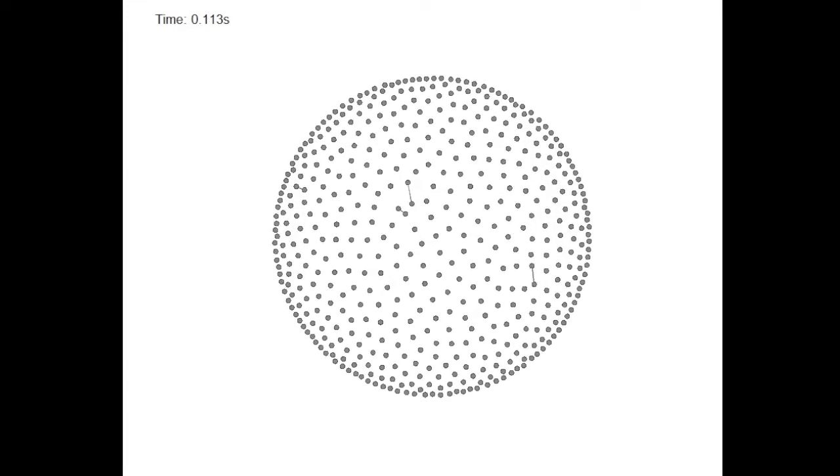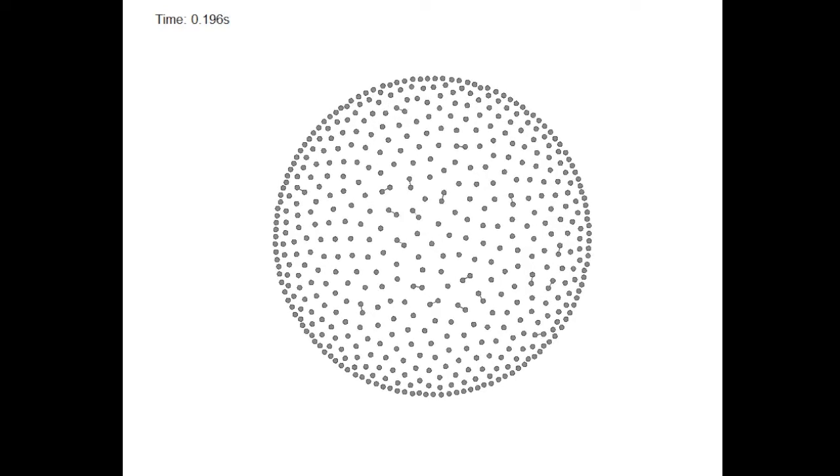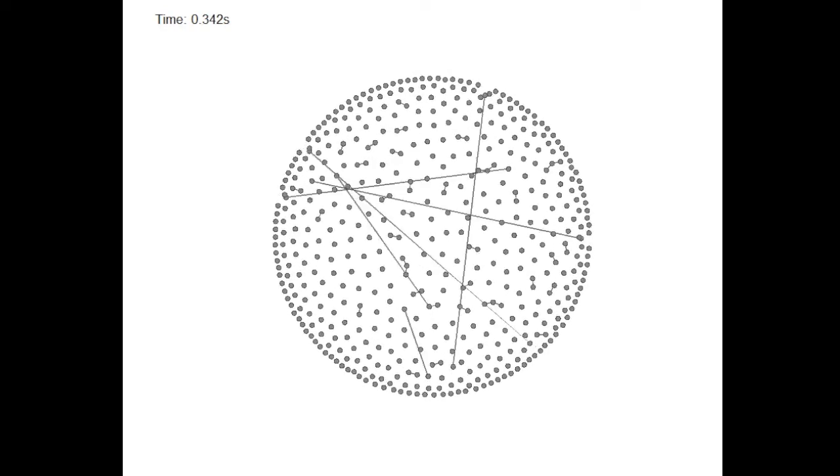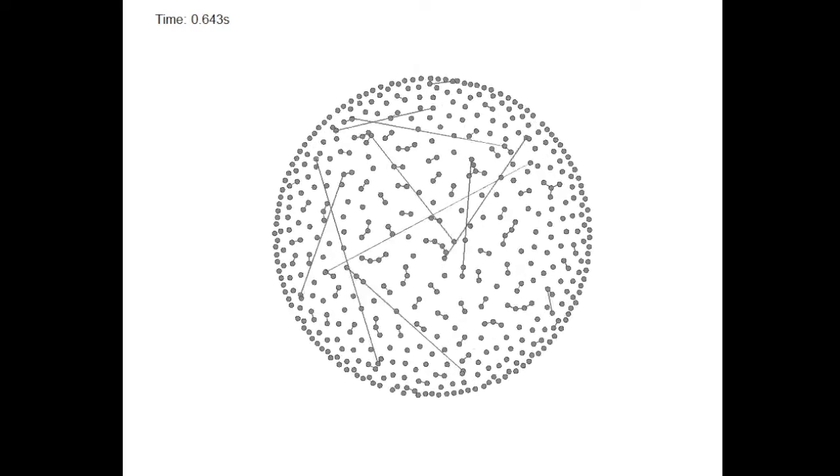As we proceed, the clock time for the simulation will be shown in the upper left. Note that as we go, we'll be running the simulation faster and faster. This is because the fibrilization process eventually starts to slow down and we don't want our movie to take as long as a real experiment.